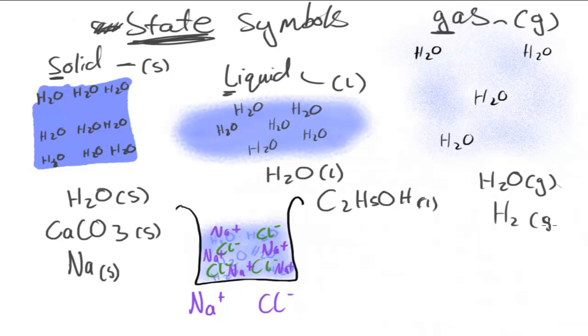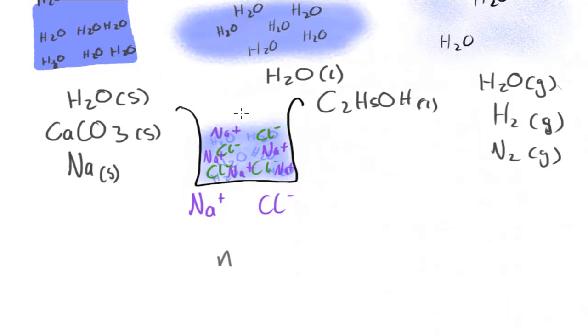Now there's another state, aqueous. Aqueous basically means it's in water and is usually used to refer to things which are dissolved in water. If you look at this, I've got a picture of ions inside water that are dissolved in water, and the two ions I've got here are sodium ions and chloride ions.